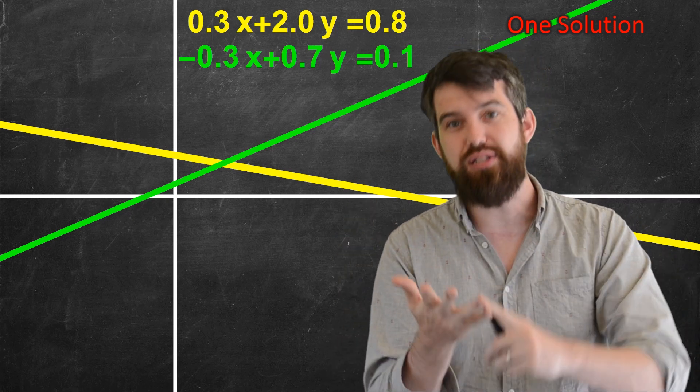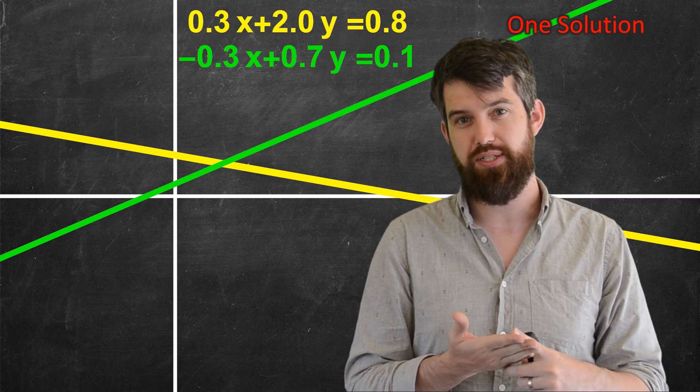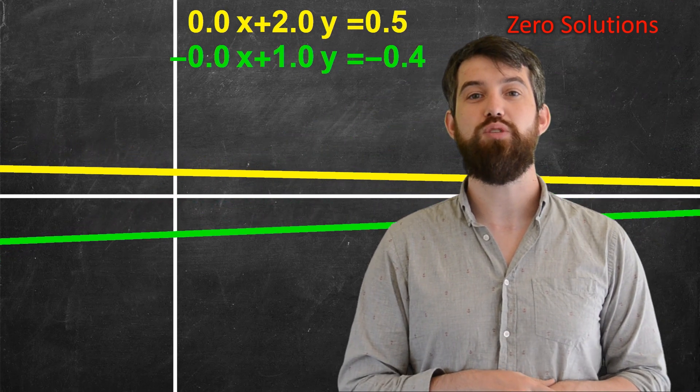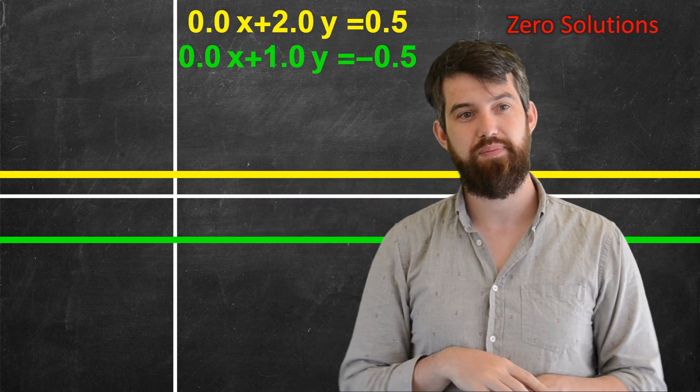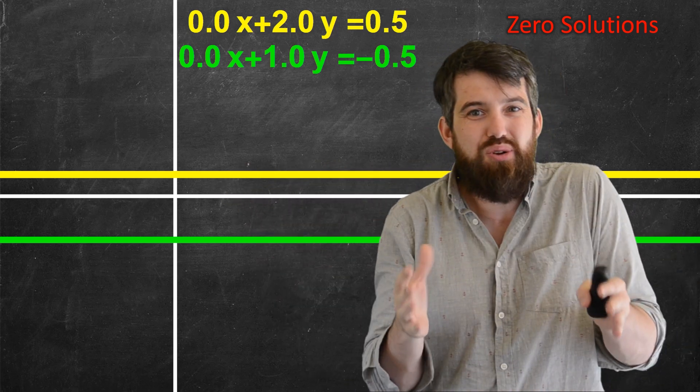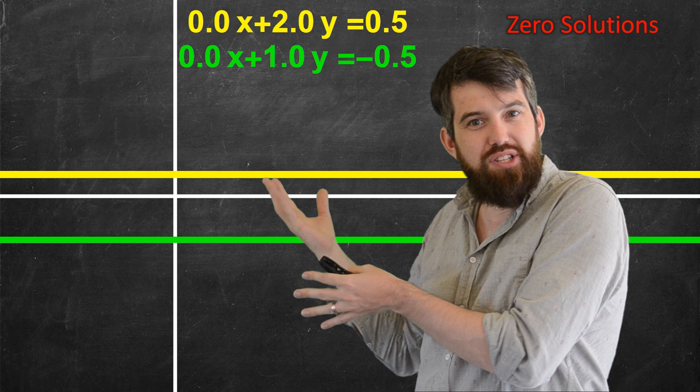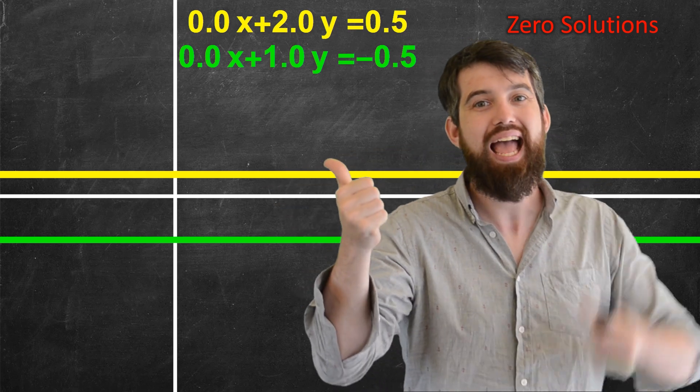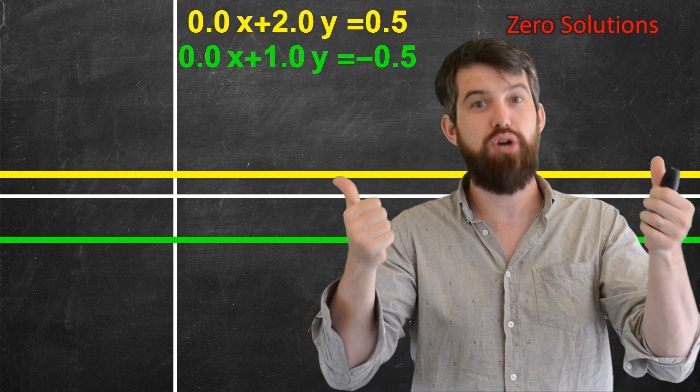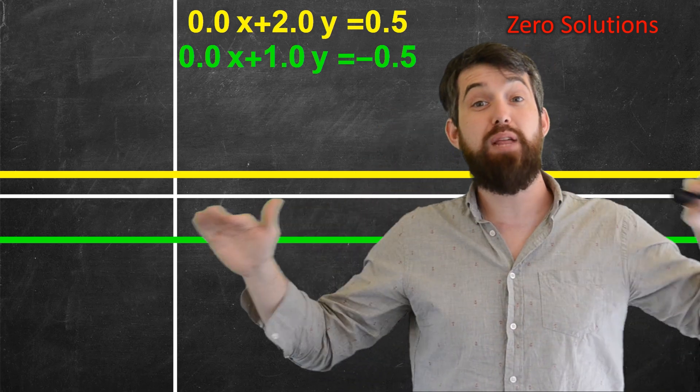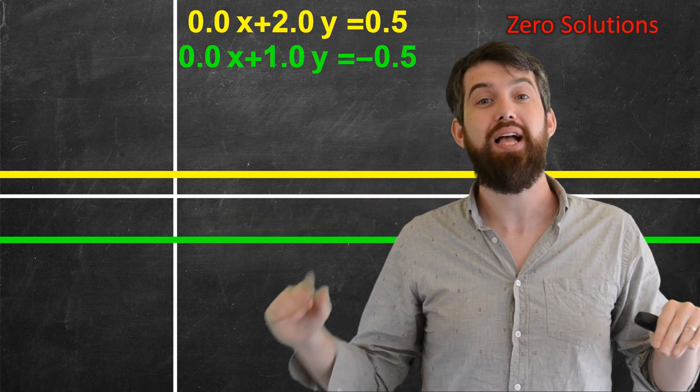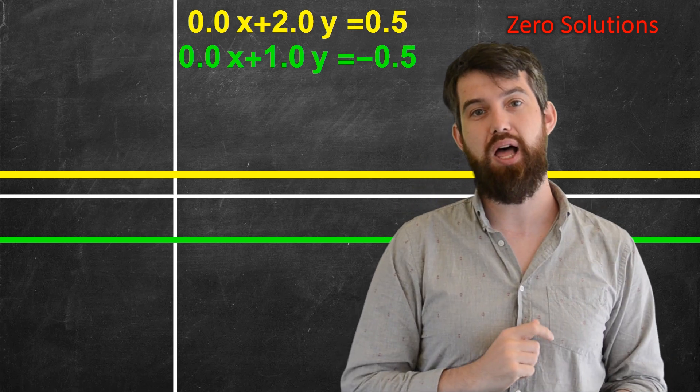So we've seen zero solutions, one solution, and infinitely many solutions. I can play around with these a little bit as well. What about this one? Here I've got these two different parallel lines. So there is no solution to this linear system because there's no point that is on both the green line and on the yellow line. There's no solution to both equations at the same time. Infinitely many to just the green line, infinitely many to just the yellow, but zero to both at the same time.